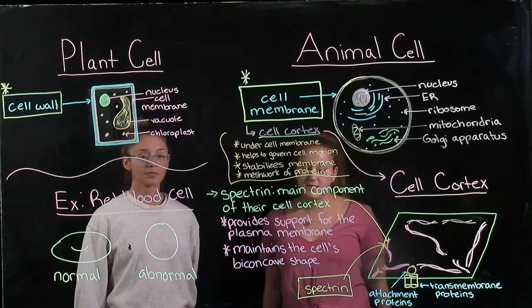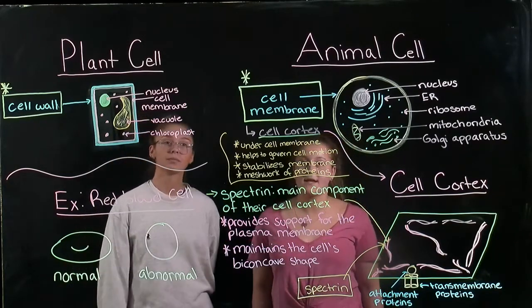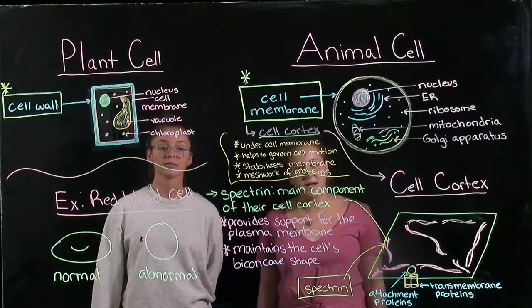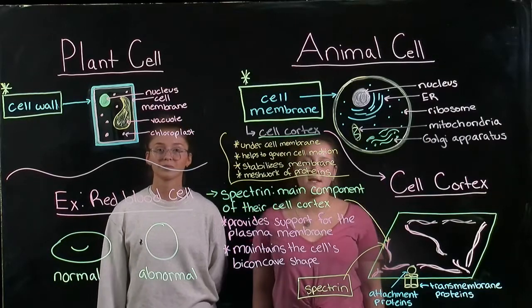In short, plant cells have cell walls that encase the plasma membrane, whereas the plasma membrane of animal cells is stabilized by the cell cortex.